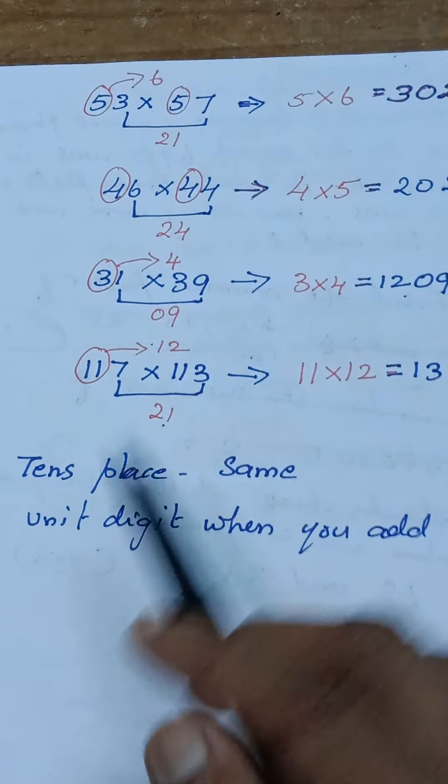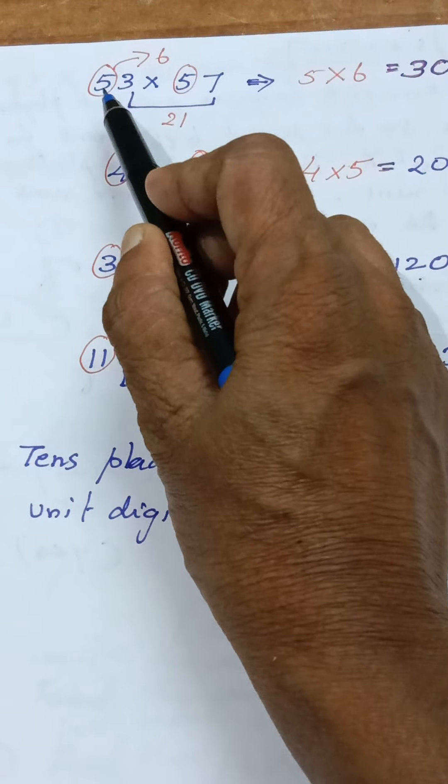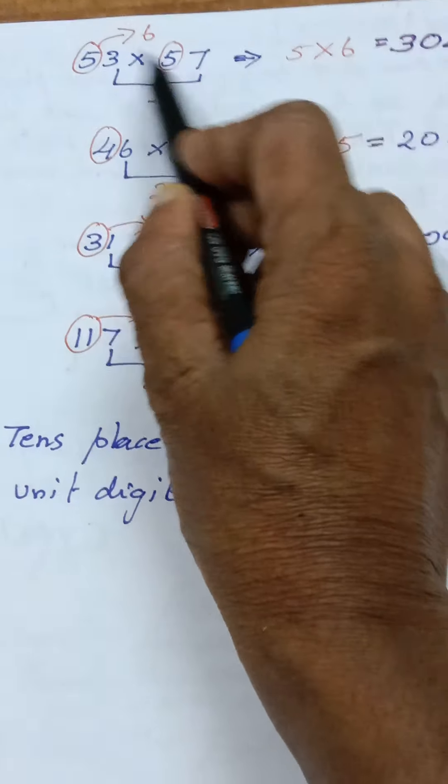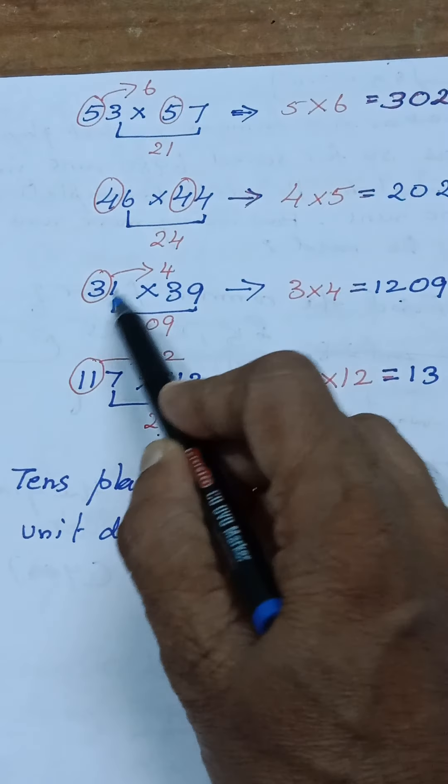First one, we want to check whether the tens place are the same. Now let us see in this: the tens place is 5, here also 5, and in the second sum 4 and 4, 3 and 3, 11 and 11. So our tens place are equal.